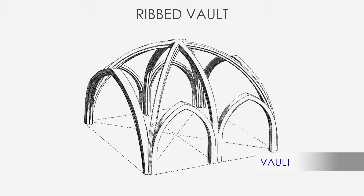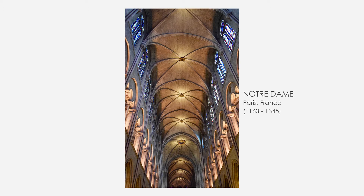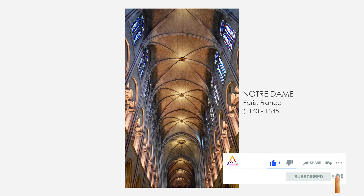The Gothic vault of pointed arches, unlike the semicircular vault of Roman and Romanesque buildings, can be used to roof rectangular and irregularly shaped plans. The other structural advantage is that the pointed arch channels the weight onto the bearing piers or columns at a steep angle, enabling architects to raise vaults much higher than before.